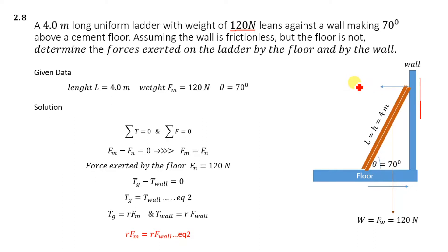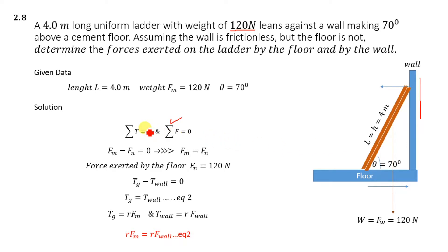For solving this numerical, we will use two conditions of equilibrium, since the ladder is in a state of static equilibrium. The first condition is that the sum of all forces acting on the ladder equals zero. The second condition is that the sum of all torques acting on the ladder equals zero. First, let's look at the free body diagram.